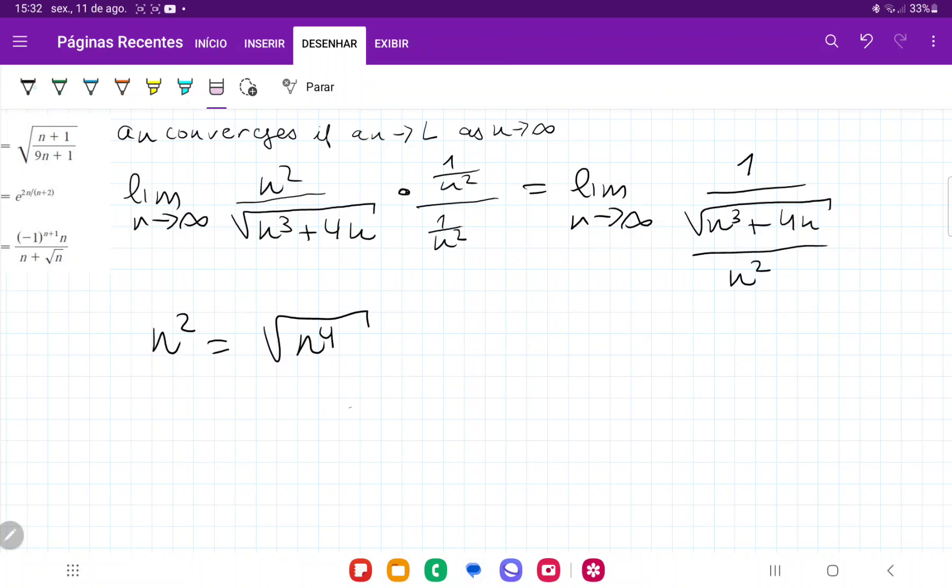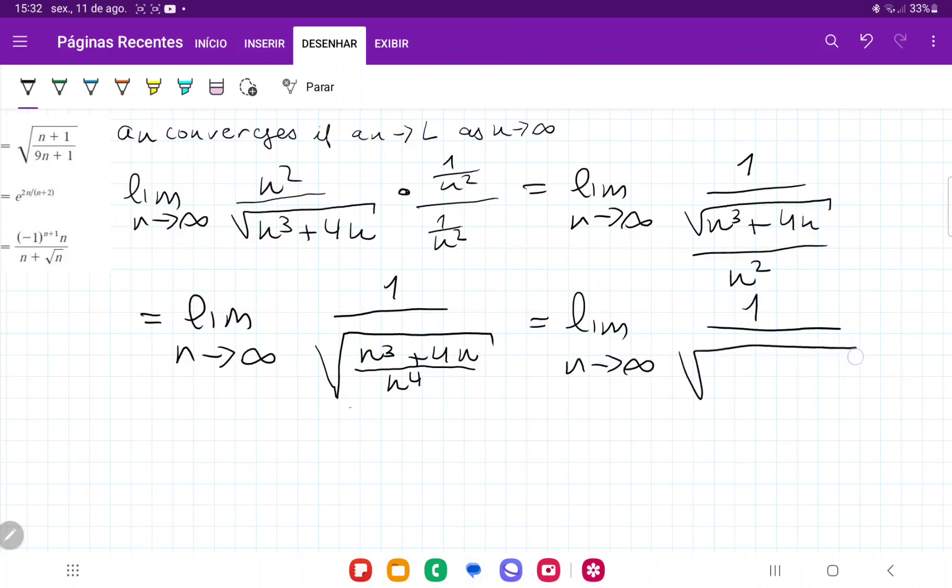So then we're going to say, okay, this is equal to the limit as n approaches infinity of 1 over square root of n cubed plus 4n over n to the power of 4. So I put everything inside the square root and actually maybe I should make this bigger to really show that it is inside. And so if we simplify it, this is equal to 1 over, so n cubed divided by n4, this is just 1 over n plus 4 over n cubed.